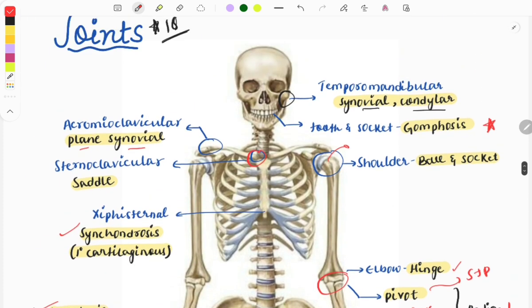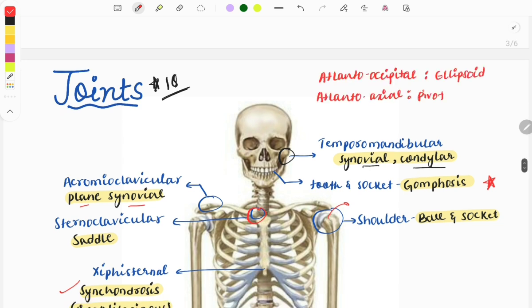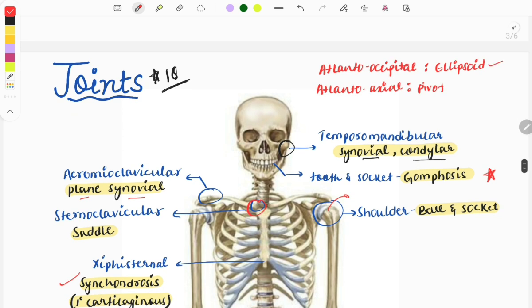Let's discuss another two important joints: the joint between the atlas and the occipital bone, that is the atlanto-occipital joint.